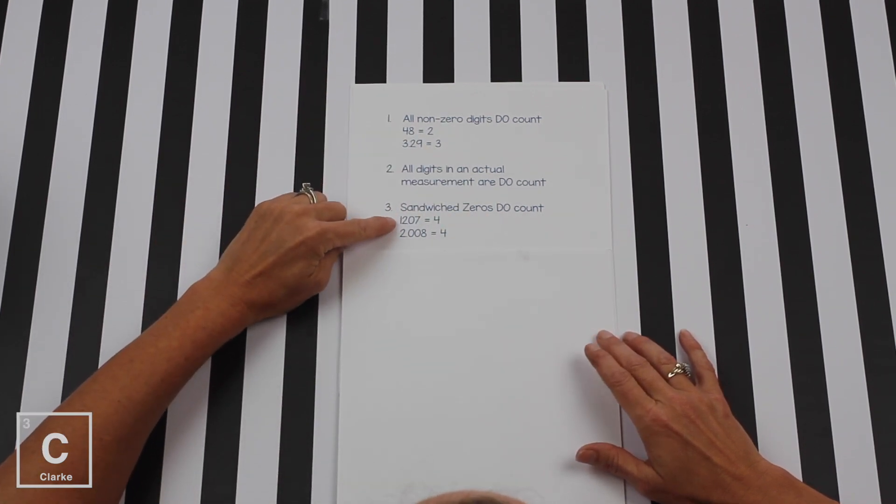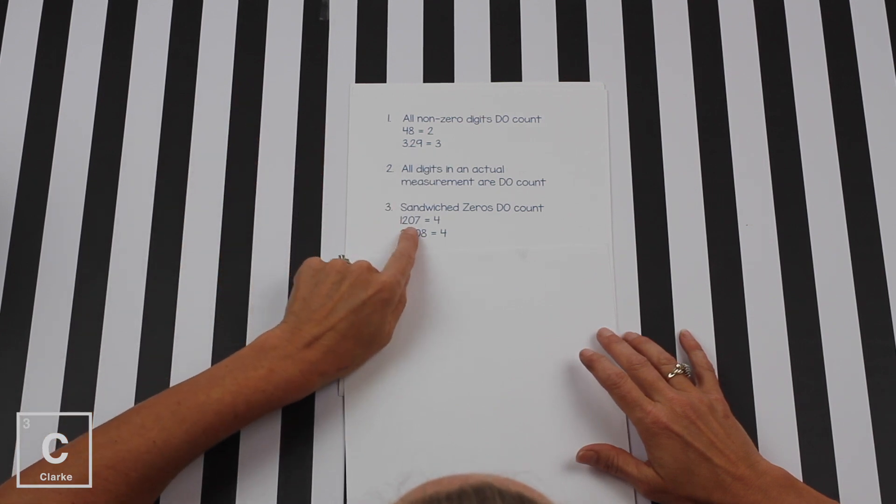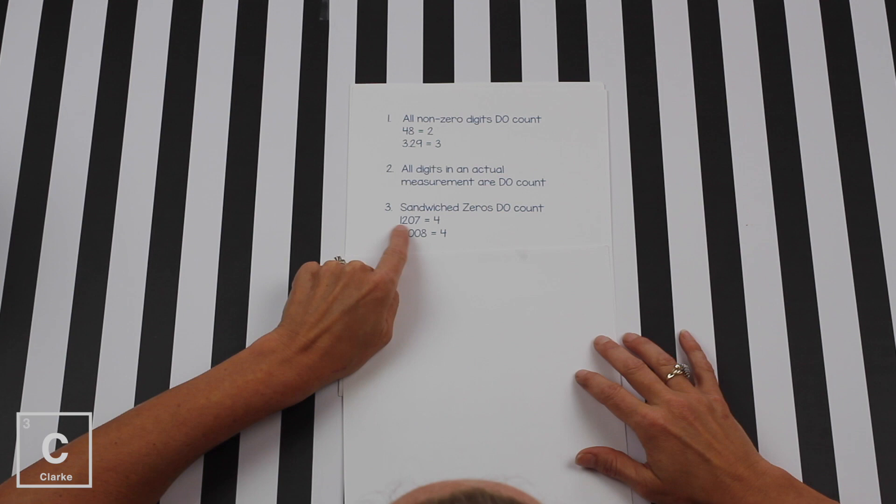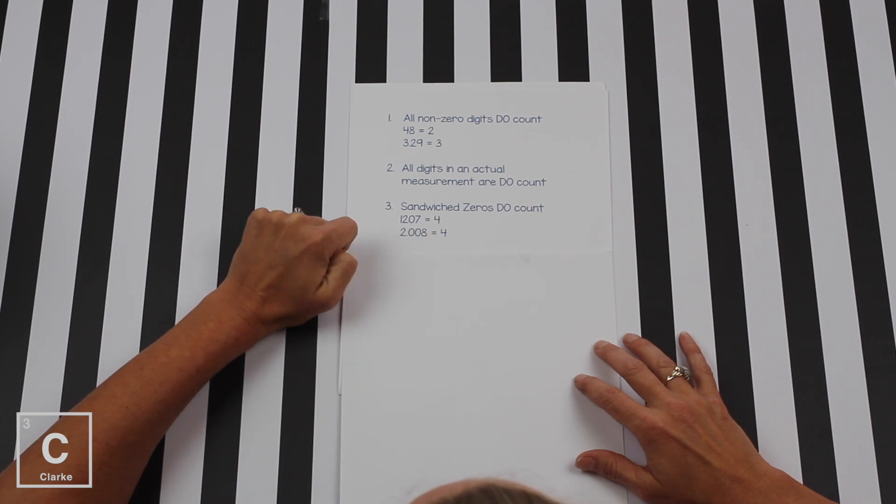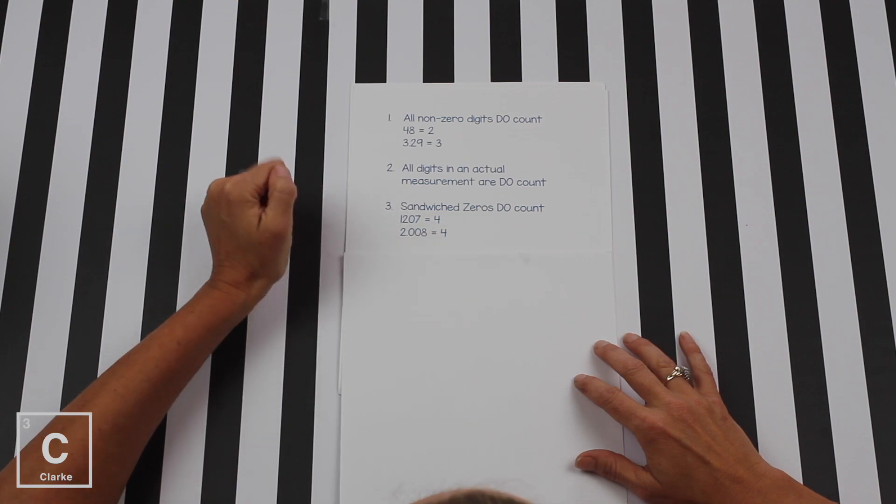The sandwiched zero does count. What's the sandwiched zero? It's a zero that's stuck between two non-zero numbers. So here, one, two, zero, seven, one thousand two hundred seven. That zero does count because it's sandwiched. So that's one, two, three, four SIGFIGS. Same thing with this. Two zeros together, but they are sandwiched between two digits that are not zeros. So one, two, three, four, four SIGFIGS.